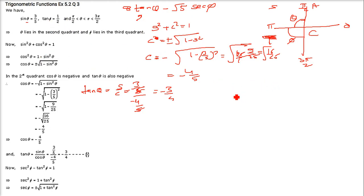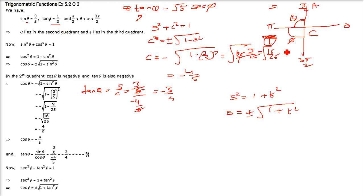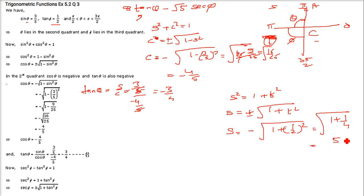Now for sec φ: we use sec²φ = 1 + tan²φ. In the third quadrant, only tan is positive; cos and sec are negative, so sec φ is negative. Sec φ = -√(1 + (1/2)²) = -√(1 + 1/4) = -√(5/4) = -√5/2.